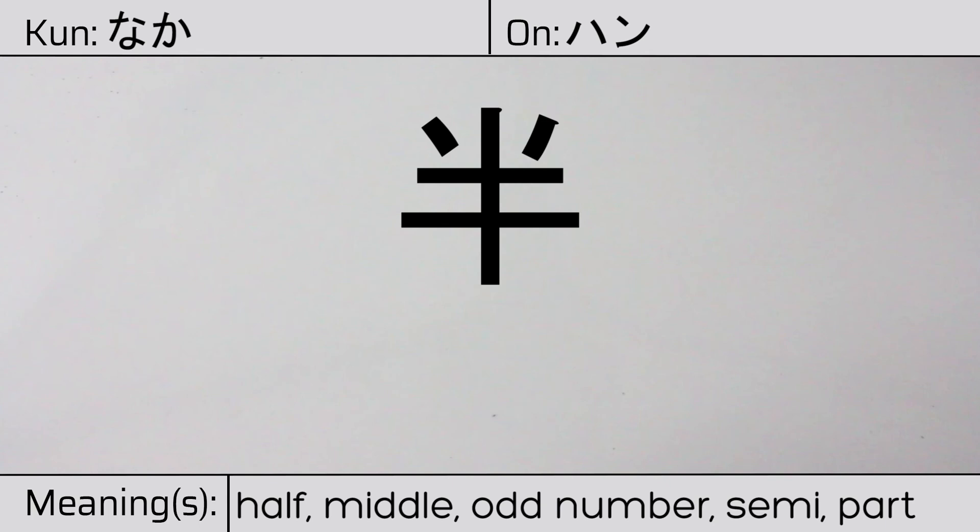Our example sentence is Rokujihan desu. It is half past six.